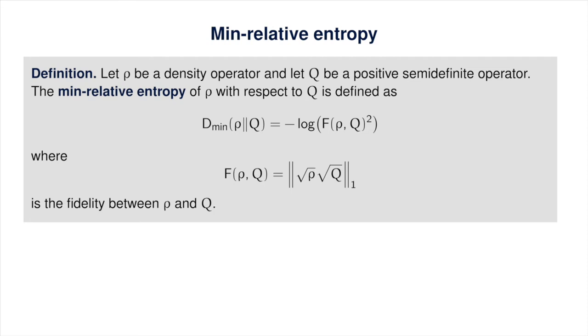We'll begin with the quantum min-relative entropy, or just the min-relative entropy for short, which is defined as you see here on the screen. The min-relative entropy of rho with respect to q is simply the negative logarithm of the squared fidelity between rho and q.